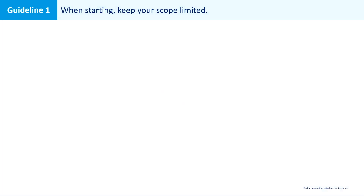Our first guideline is: when starting, keep your scope limited. In other words, when you're doing the first rounds of carbon accounting for your organization, keep the scope limited and feasible. Don't try to cover everything at first, else you might get lost in the process. Instead, focus on a certain scope, learn from experience, and then enlarge your scope. So what exactly does scope mean in the context of carbon accounting?